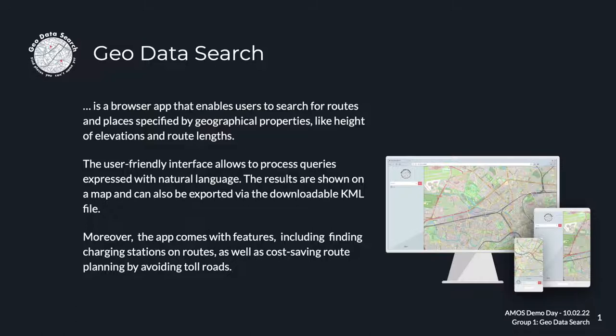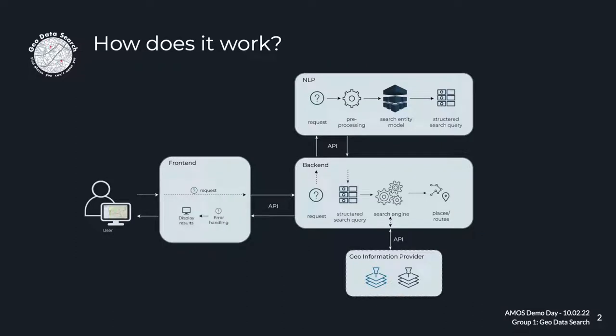But how does it work? We decided to divide our application into three main components: a frontend, a backend, and an NLP component, each running in a Docker container. The frontend provides a user interface, such that the user can make requests and view the results in a pleasant manner. The backend handles the communication, both with the other two components and with the external information providers, such as the HIA API. These supply us with the necessary geographical information.